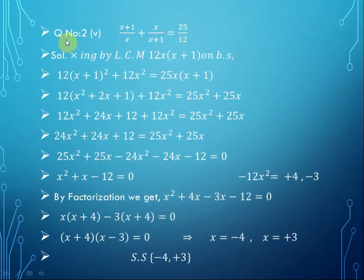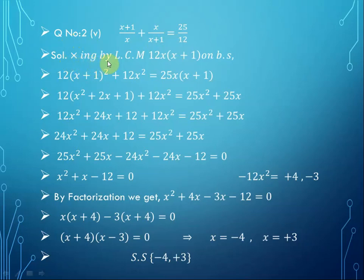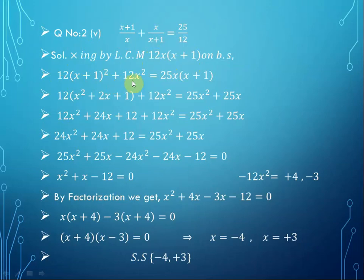Now let us take another example from question number 2, part 5, which is a fractional equation: (x plus 1)/x plus x/(x plus 1) equals 25/12. Multiplying each term by the LCM, which is 12x(x plus 1), we get 12(x plus 1)² plus 12x² equals 25x(x plus 1).